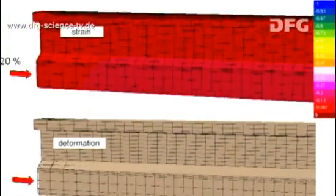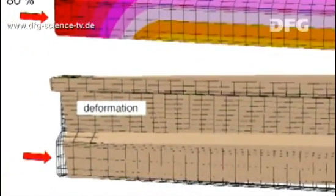The pre-stressing force in the strands compresses the beam. Since the strands are located in the lower cord, the deformation and compression have the largest values there. The lower model shows how the beam is deformed.